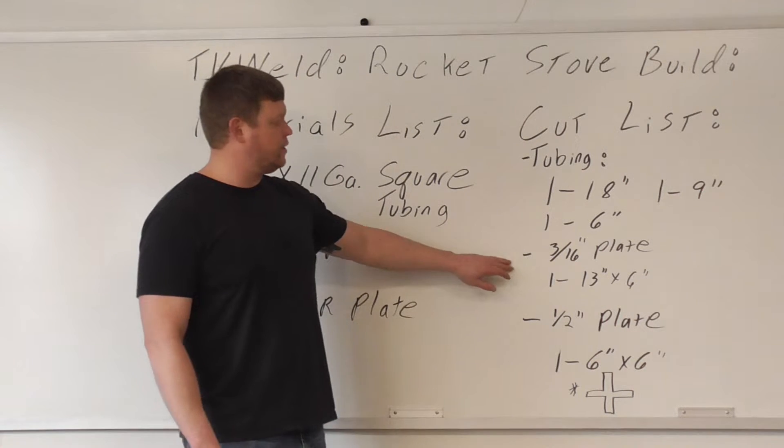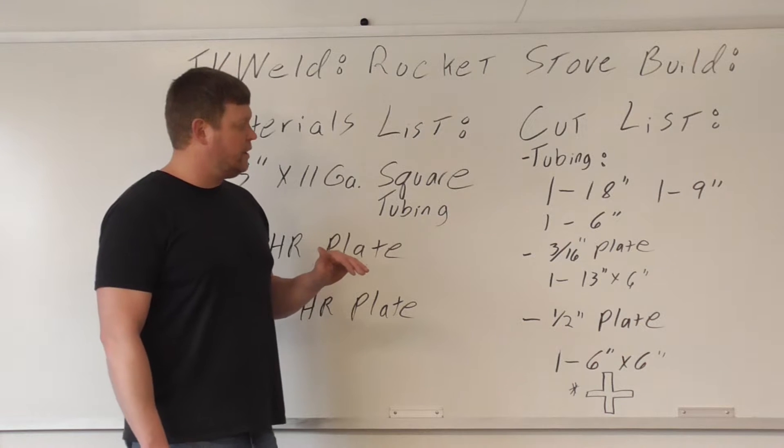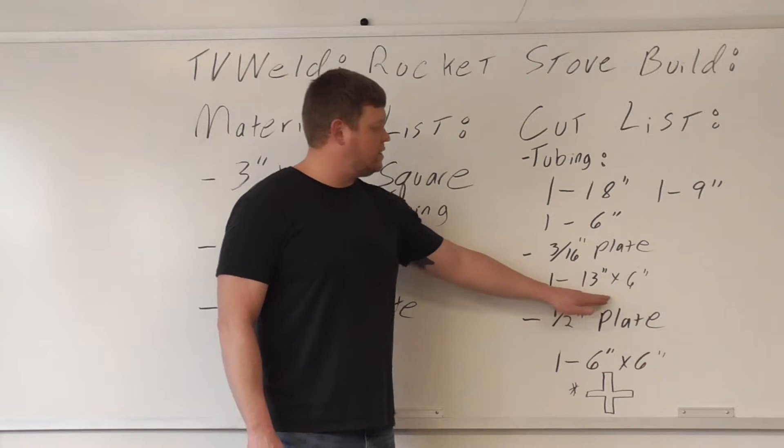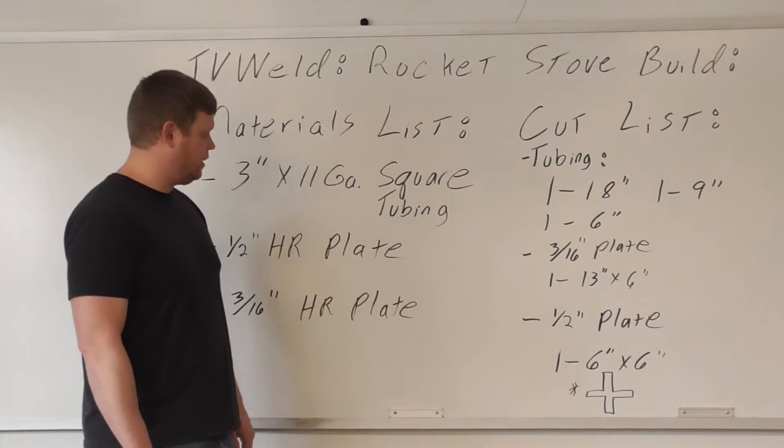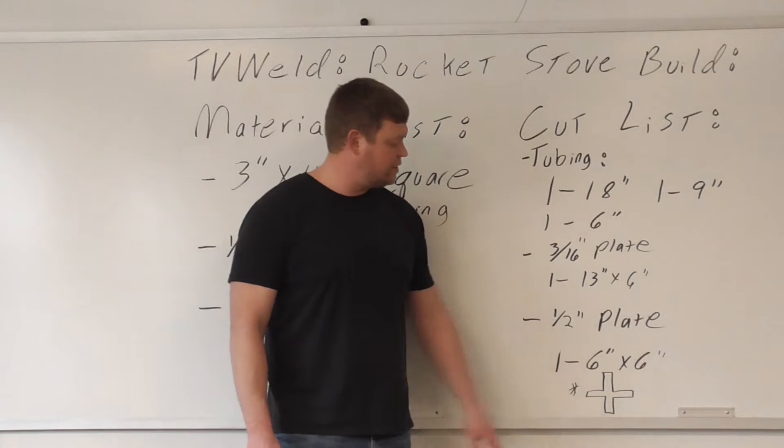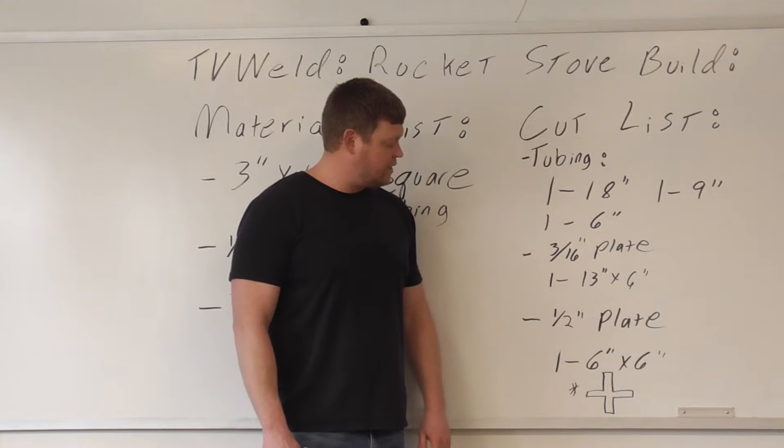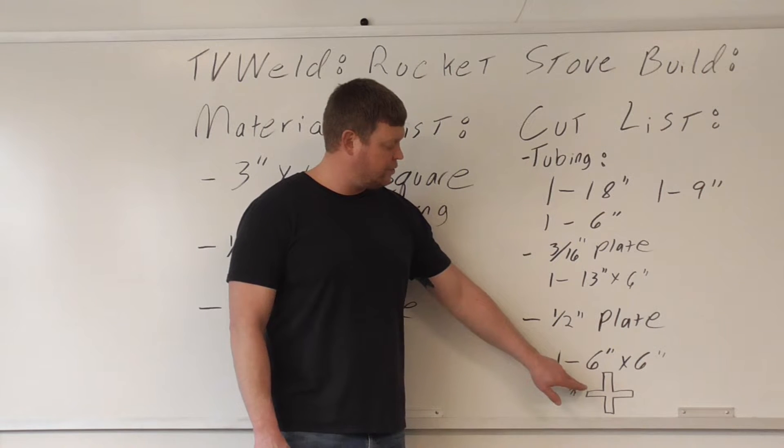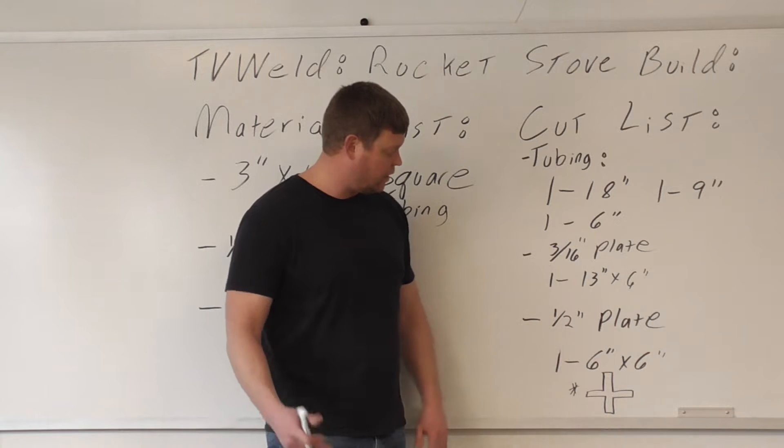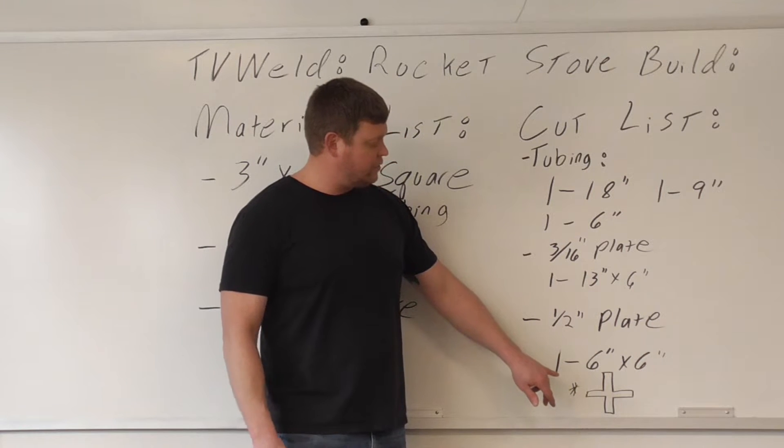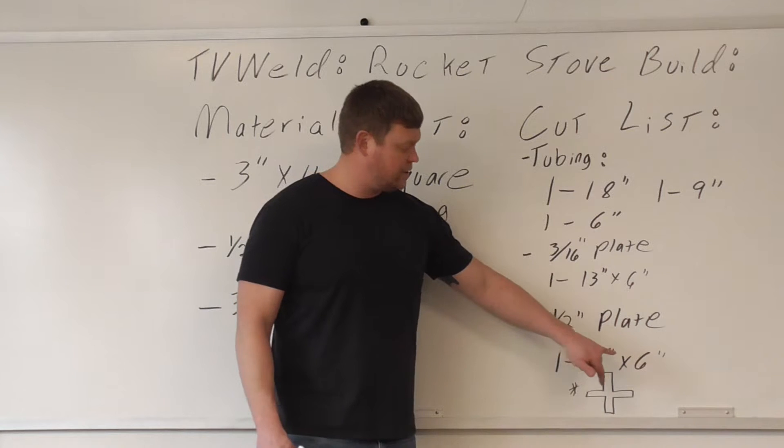The 3/16ths plate is going to go on the bottom of the rocket stove, that's going to be 13 inches by 6 inches. We're going to cut that on a shear. And then we have this half inch plate here, written down as 6 inch by 6 inch, and the reason I kind of did that is because we're going to cut it into kind of like a plus sign, just an X, whatever color you want to call it.